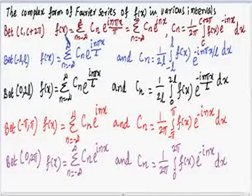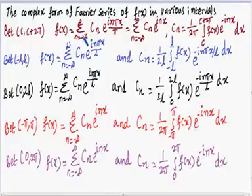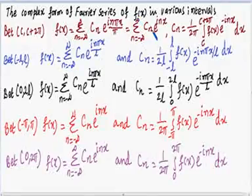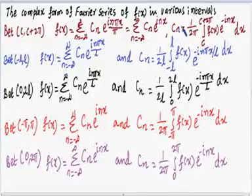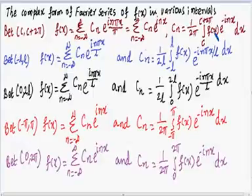Between the interval c to c+2π, f(x) can be represented in complex form of Fourier series as f(x) = Σ (n = −∞ to +∞) c_n · e^(inx), and c_n is calculated by the formula: c_n = (1/2π) · ∫[c to c+2π] f(x) · e^(−inx) dx.